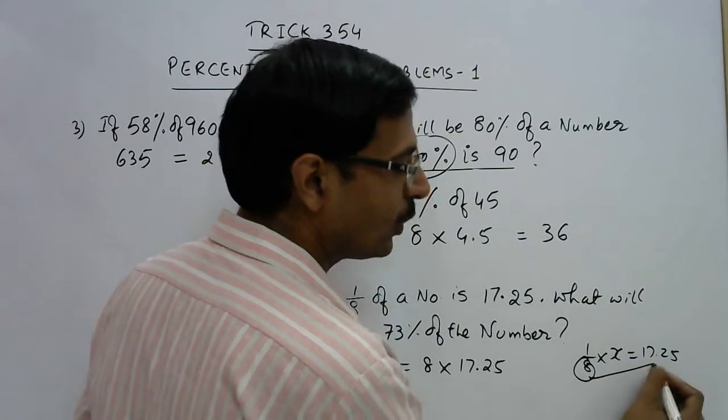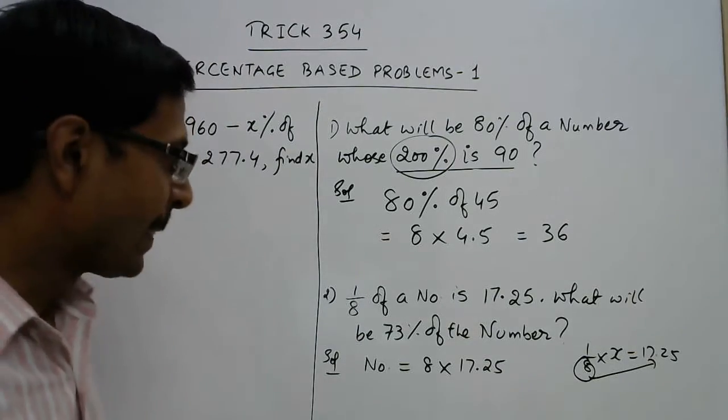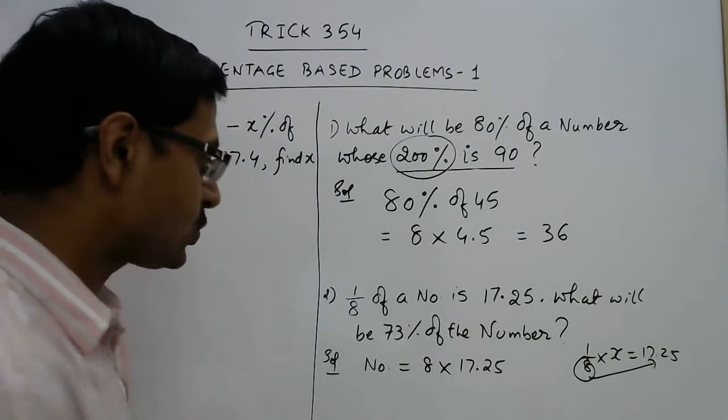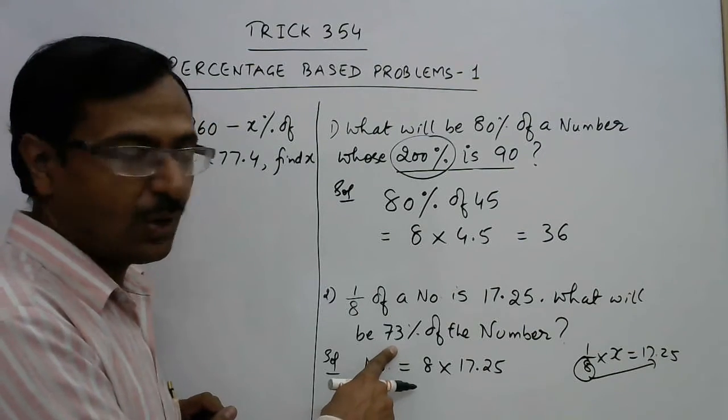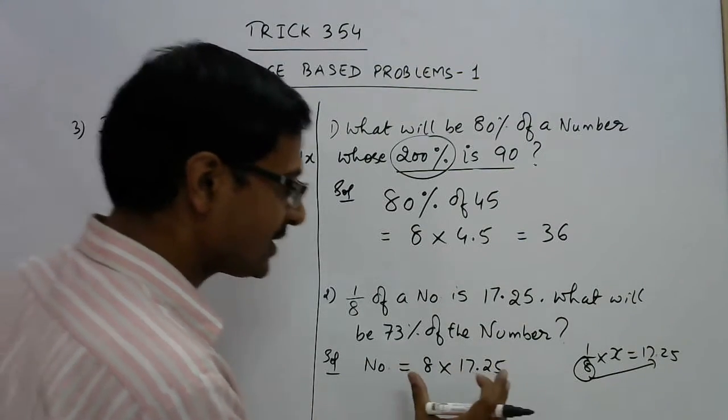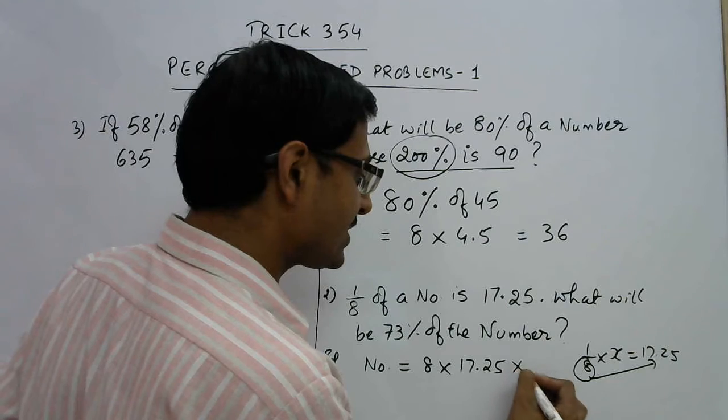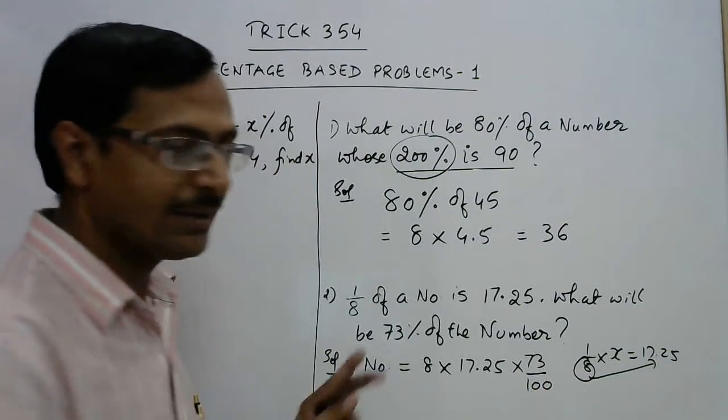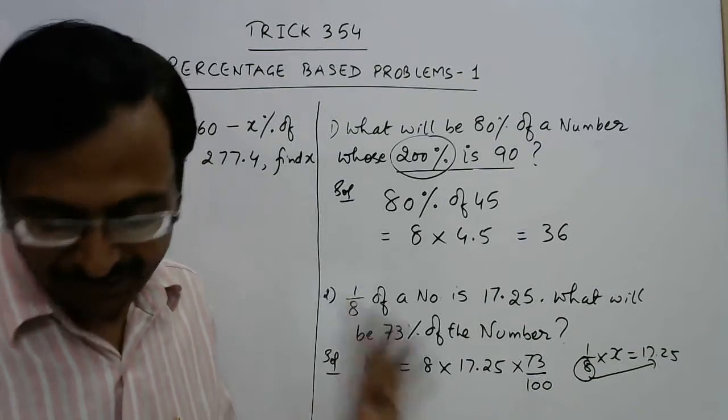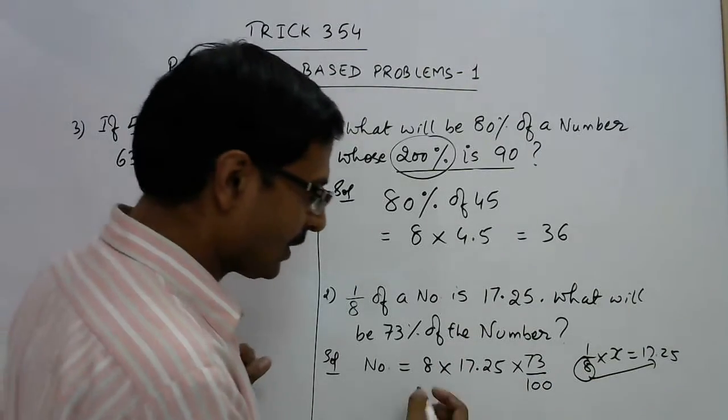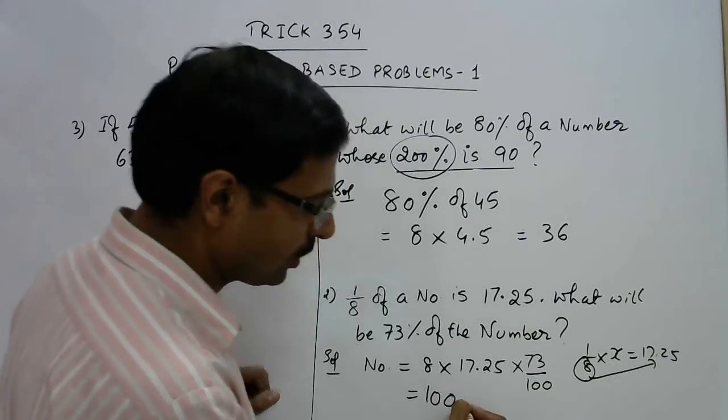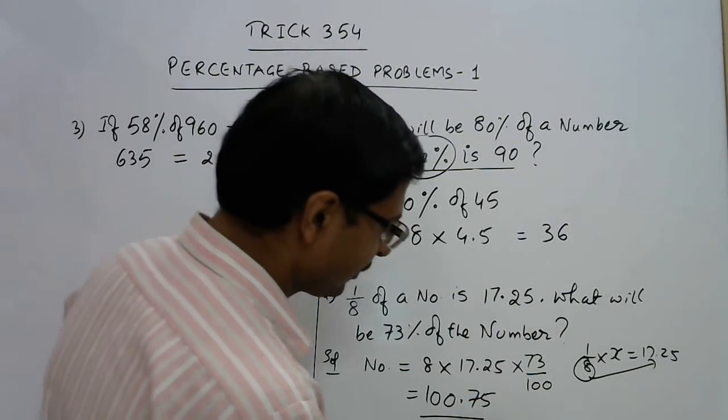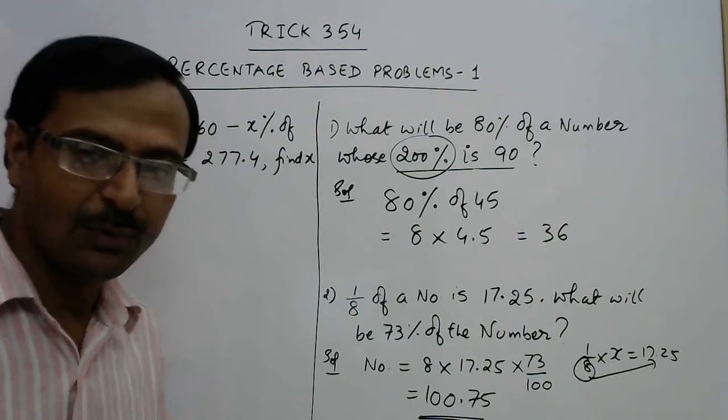Why? Because one-eighth of the number is 17.25, so obviously this 8 will go in the numerator. So the number is 8 into 17.25. And now what you need is to calculate 73% of the number. So 73% means 73 upon 100 of this number. I have done this for you already; the answer will come out to be 100.75.